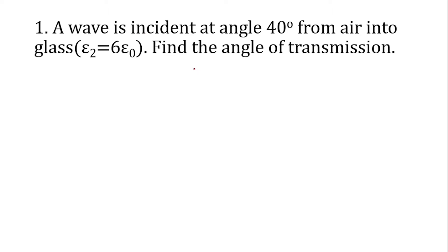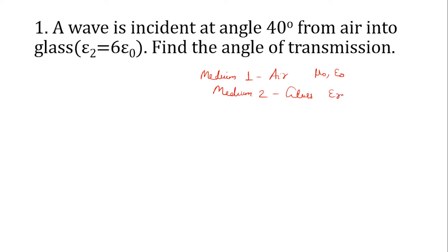A wave is incident at an angle of 40 degrees from air to glass. Medium 1 is air and medium 2 is glass. For air, it is μ₀ and ε₀ — free space. For glass, εᵣ = 6, so ε₂ = 6ε₀. When not specified, you can take μᵣ = 1. We can assume it is a non-magnetic medium.